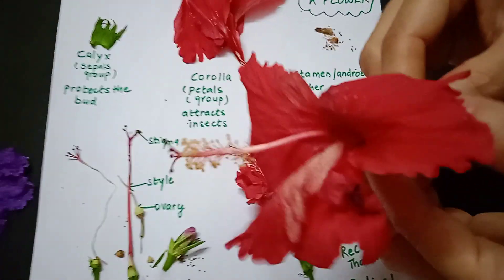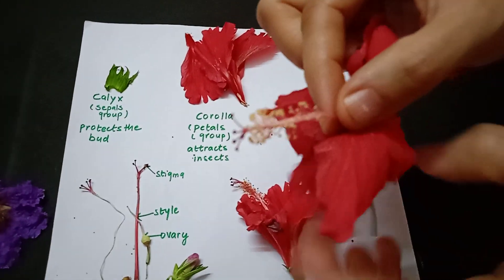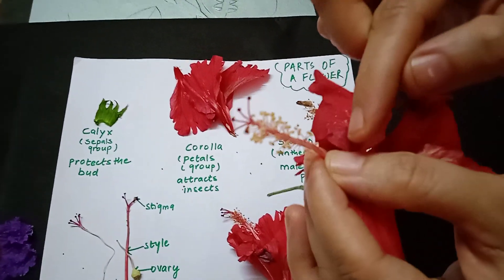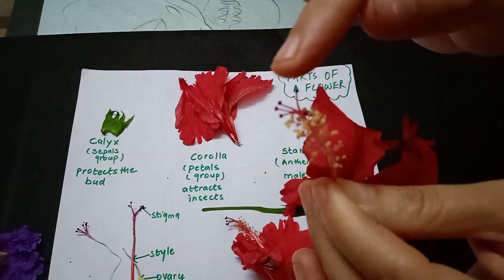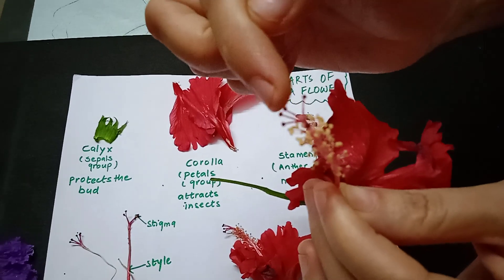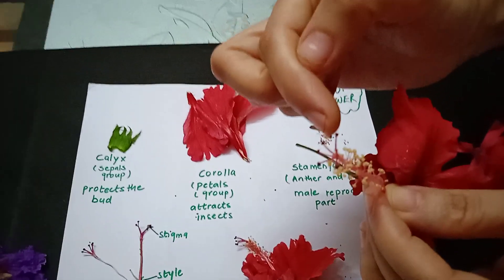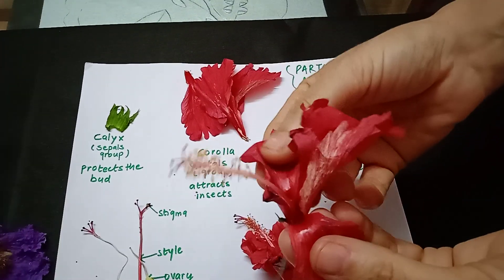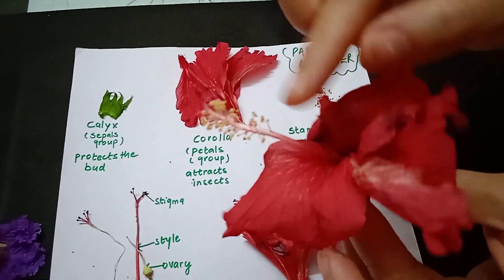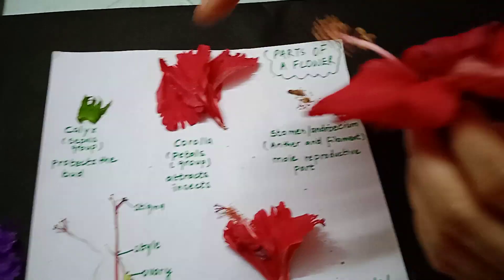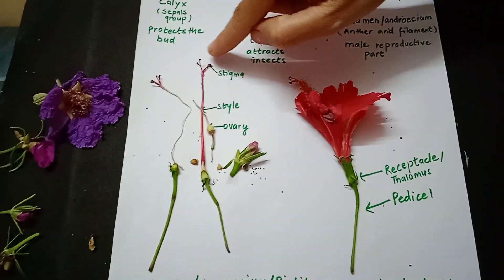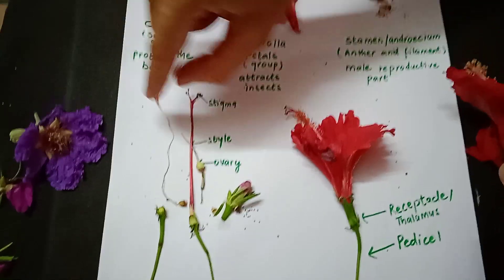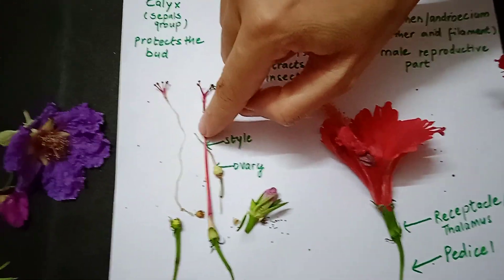The fourth layer of the flower features a tube stretching at the top with a deep maroon structure called the stigma. The tube is called the style. If you dissect the flower, the style connects into the ovary at the bottom. So you have stigma at the top, then style, and then the ovary.